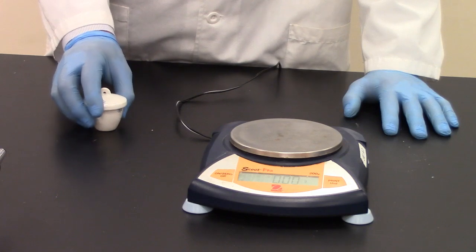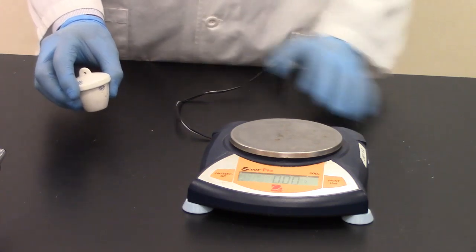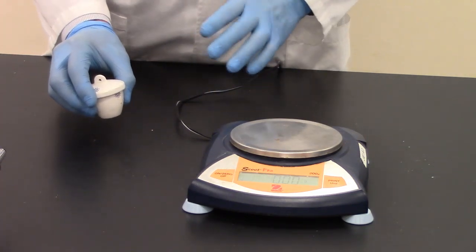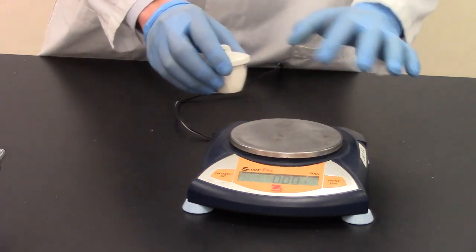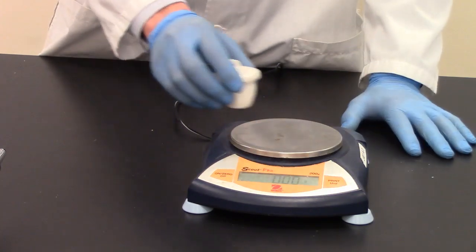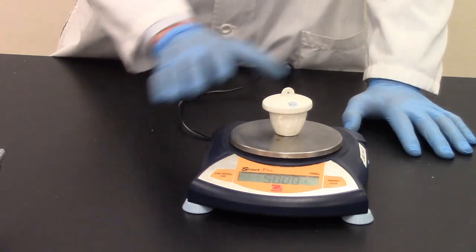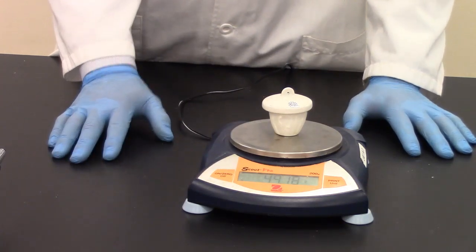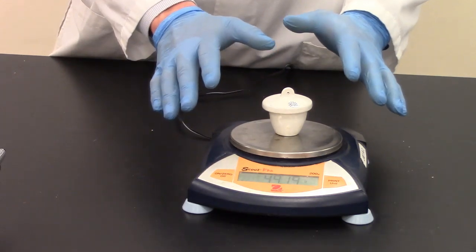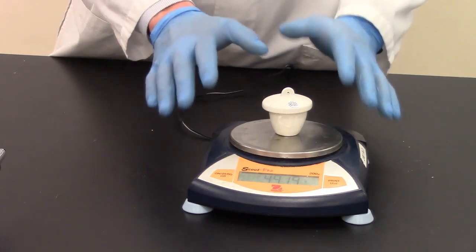And then once you realize that it is cool to the touch or maybe a little warm but not hot, go ahead and take it over to the balance. I'm going to zero this out and then get a mass. Now when I mass it out the second time, this is the mass of my crucible and the product, the solid product.